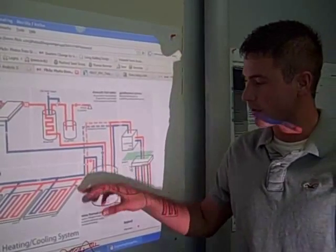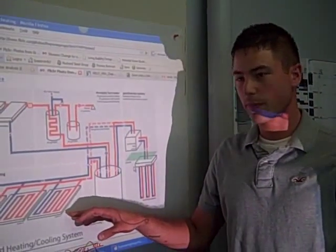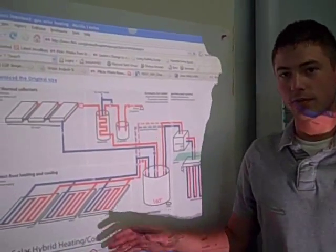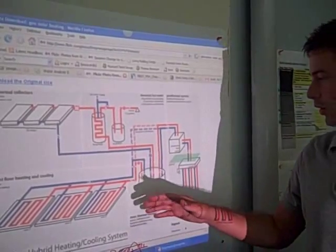From there, that water is pumped into a radiant floor heating system, where it's piped through the entire floor square footage and the spaces are heated accordingly.